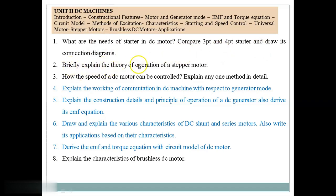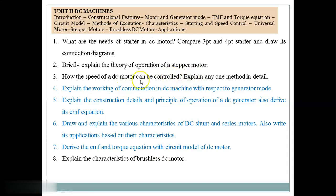Question 2: Briefly explain the theory of operation of a stepper motor. Question 3: How can the speed of a DC motor be controlled? Explain any one method in detail. Speed control of DC motor is explained two ways — one for shunt motor and another for series motor. For the shunt motor, both armature control and flux control methods are involved. Similarly for the series motor, flux control is further divided into: Armature Diverter, Field Diverter, Tapped Field Control, and Paralleling of Field Coils. Students may refer to their textbook for clarity.